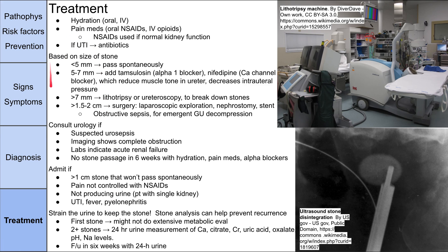A helpful tip is that the chance of passing a stone depends on size on a scale of 0 to 10 millimeters. A one millimeter stone has a 90% chance of passing spontaneously; a two millimeter stone has an 80% chance. This inverse relationship continues up to about 10 millimeters — a nine millimeter stone has only a 10% chance of passing spontaneously. A stone one centimeter or greater essentially won't pass spontaneously and will need admission for lithotripsy or surgery.